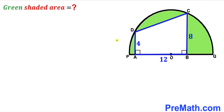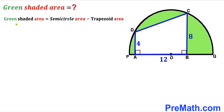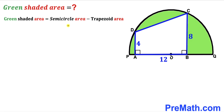Let's get started. Since we are interested in calculating the area of the green shaded region, we can observe that the green shaded region area is equal to the semicircle area minus the area of the blue trapezoid. So our task is to calculate both the semicircle area and the trapezoid area before we can find the green shaded region area.